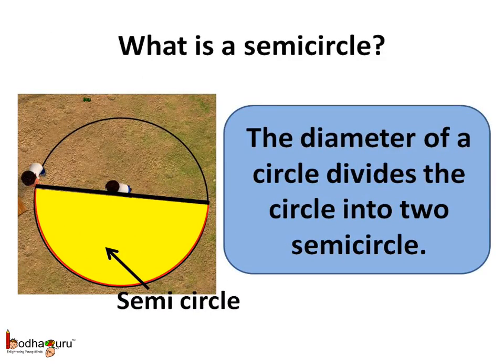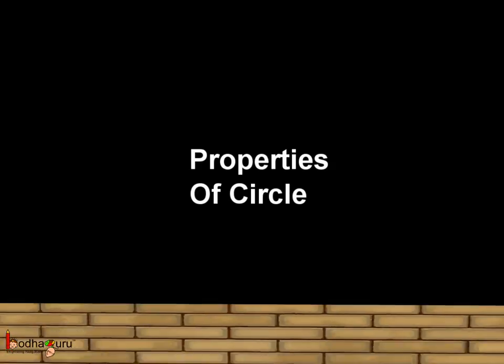What is a semi-circle? The diameter of a circle divides the circle into two semi-circles. So that was all about circle. Bye bye children!